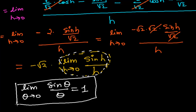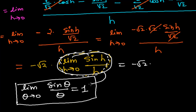So −√2 times 1 equals −√2. That is our answer.